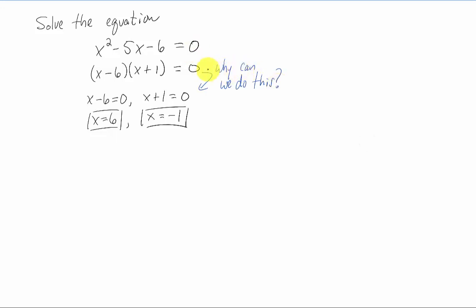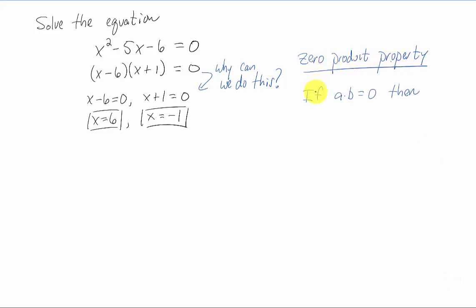You might still have the question: why are we actually allowed to do this? The answer is called the zero product property. The zero product property says that if a times b equals 0, then a is 0, or b is 0, or both. How do you get two numbers to multiply together to equal 0? One of them has to be 0, if not both. So we have two expressions multiplied by each other equaling 0, and we've used the zero product property along with our factoring skills to solve the equation.